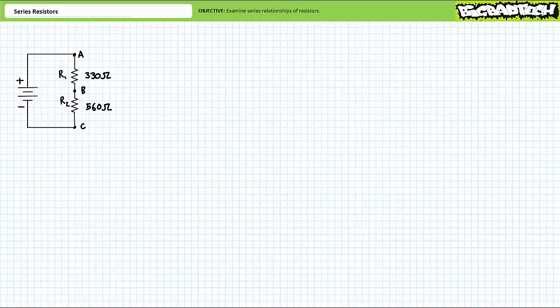A series arrangement means there is one path and one path only. Here's an example of a series circuit consisting of resistor 1 having a value of 330 ohms between node A and B, and resistor 2 having a value of 560 ohms between node B and C. Any current emanating from the positive terminal of the source must travel into resistor 1, out of resistor 1, into resistor 2, and out of resistor 2 to reach the negative terminal. Series resistances add up.